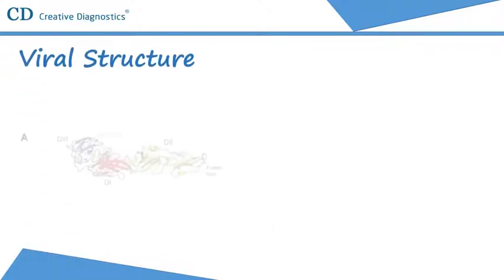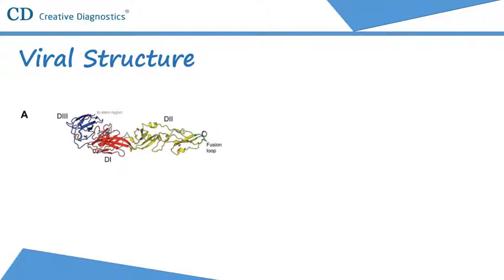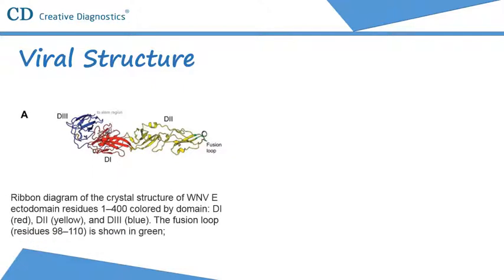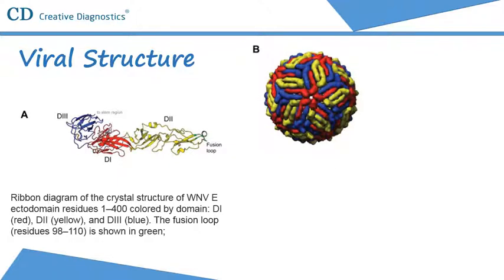West Nile virus contains three structural proteins and a host-derived lipid bilayer. The E glycoprotein is the major flavivirus structural protein present on the viral surface, as well as the dominant target of neutralizing antibodies. It is responsible for binding the host cellular receptor and endosomal fusion. The mature West Nile virus virion is about 50 nanometers in diameter with 180 copies of the E glycoprotein. The homodimeric arrangement of the E protein shields exposure of the fusion loop at neutral pH, creating three unique chemical environments according to two-, three-, or five-fold symmetry axes.